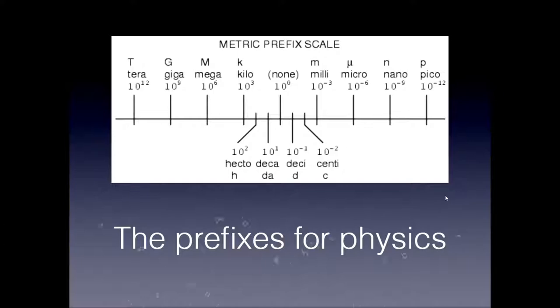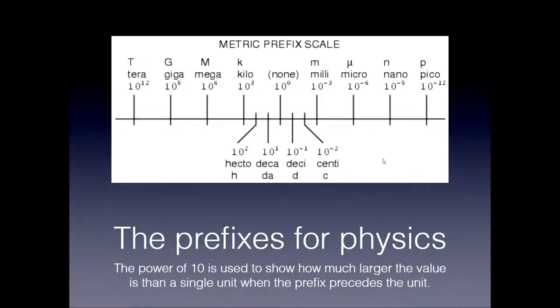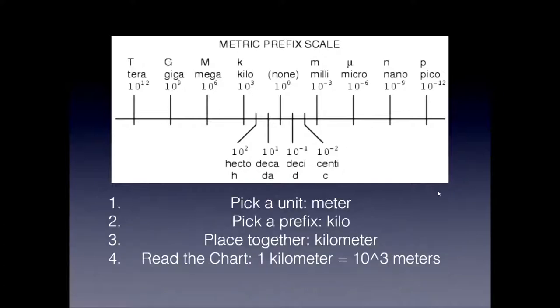And this metric prefix scale is perfect for understanding what each one means. So here are those prefixes. A power of 10 is associated with each and every prefix that you see. It's used to show how much larger, by a certain factor, a power of 10, the value is than the single unit when the prefix is preceding the unit. For example, we saw kilometers back there. Kilo, 10 to the 3, so a kilo stands for 1,000, or 10 to the 3 times whatever unit it precedes.